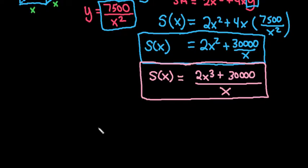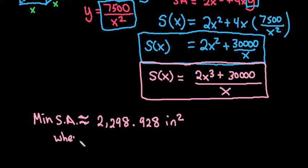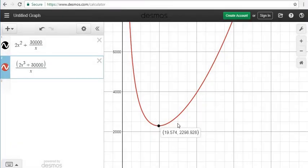This is not going to be exact because it wasn't a perfect cube, but it is close enough. So our minimum surface area is approximately 2,298.928 inches squared — remember it's inches squared because we're talking about area, not cubic inches — and that occurs when x is approximately 19.574 inches. Just round to however many decimal places it tells you to round to.